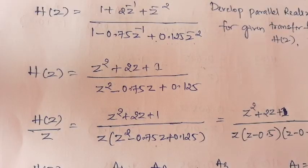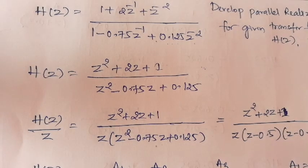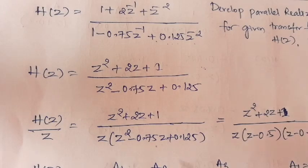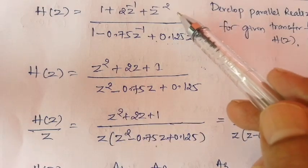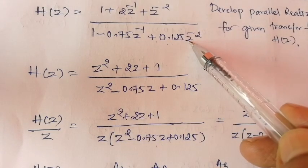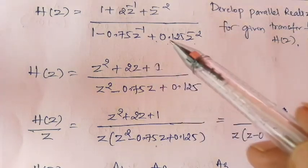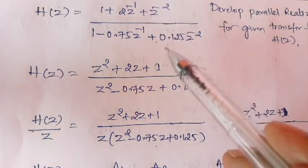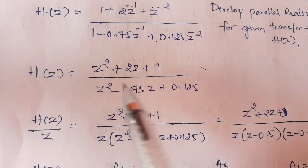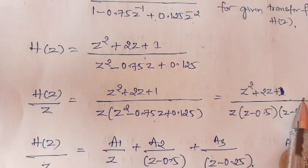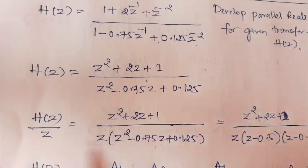To realize in terms of parallel realization, we have to follow the partial fraction expansion method. For that, we have to express the given system function in positive powers of z. Observe that z⁻² is present in the numerator and denominator polynomial, so we multiply both by z².